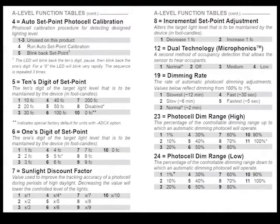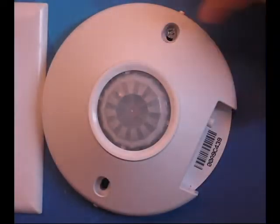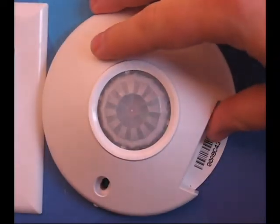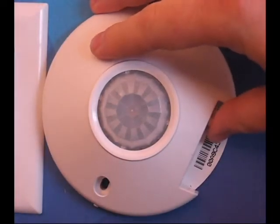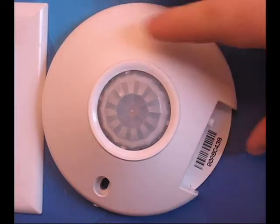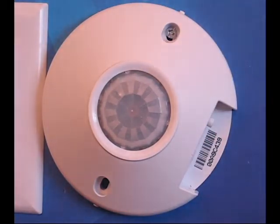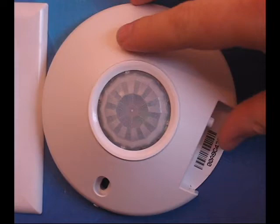To turn PDT off, we will need to hit the programming button twice while in the dual technology function. Re-enter the dual technology function by hitting the programming button 12 times, and before the LED cycles three times again, hit the user button twice.